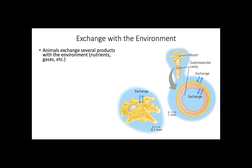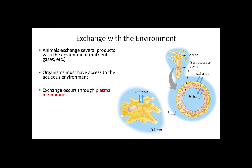In terms of function, all animals must exchange nutrients, waste, and gases with their surrounding environment, and this represents another limitation for body plans. Exchange must occur in an aqueous environment and through plasma membranes of each cell. Exchange directly depends on two factors: the surface area of a membrane and the body volume of an individual. This represents the surface area to volume ratio, with small unicellular organisms having higher ratios than large individuals.